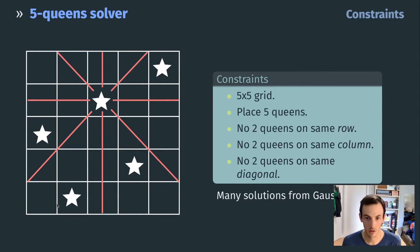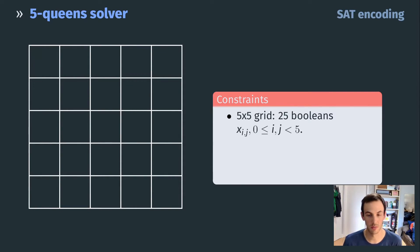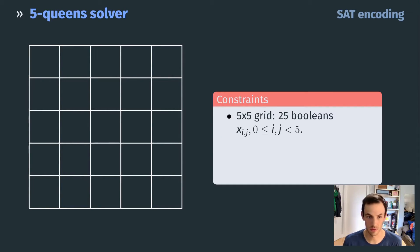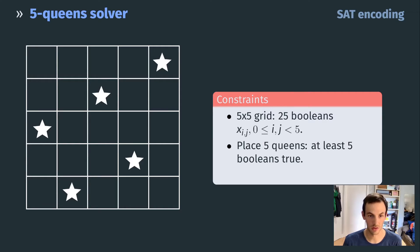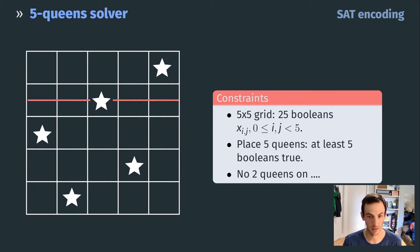The first step when modeling a problem as SAT is to define a set of booleans such that a satisfying assignment corresponds to a solution. For the 5x5 grid, we use 25 booleans x_ij: if x_ij is True, there is a queen at cell (i,j); if False, the cell is empty. We want exactly five booleans to be true, and we add constraints to enforce no two queens on the same row, column, or diagonal.